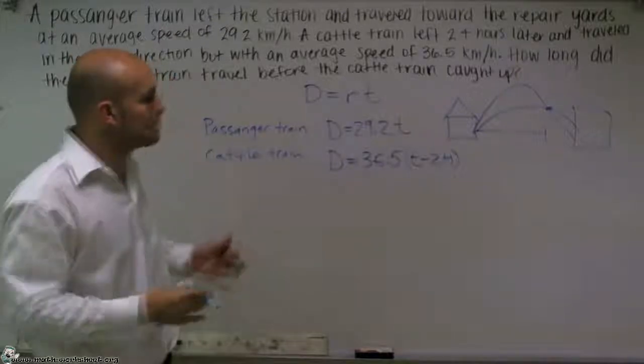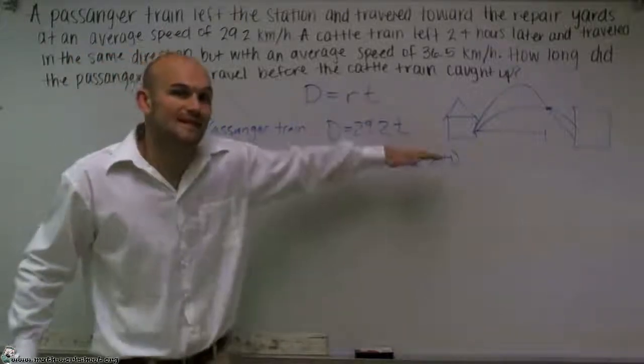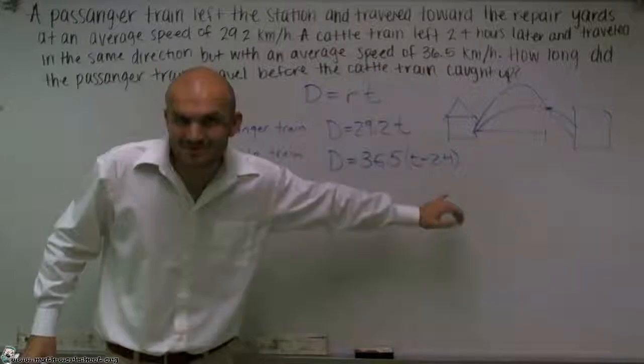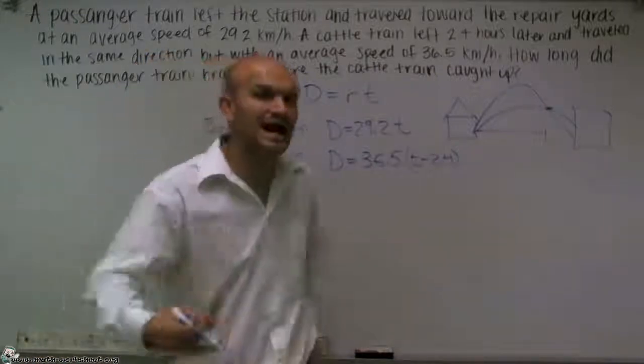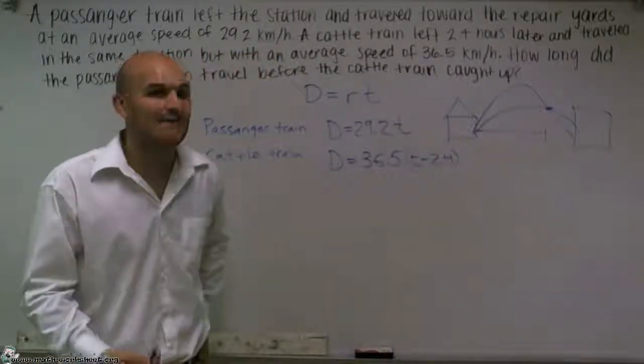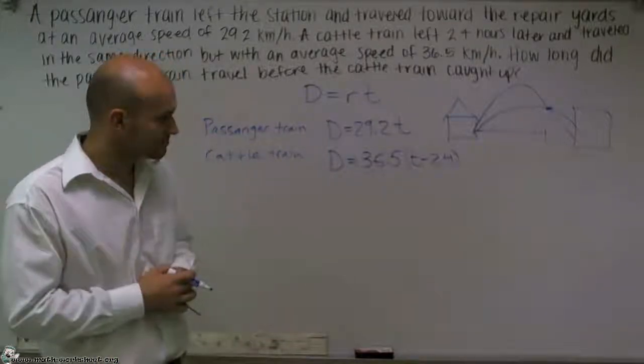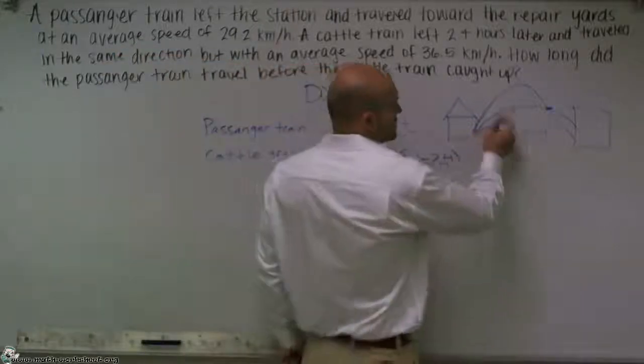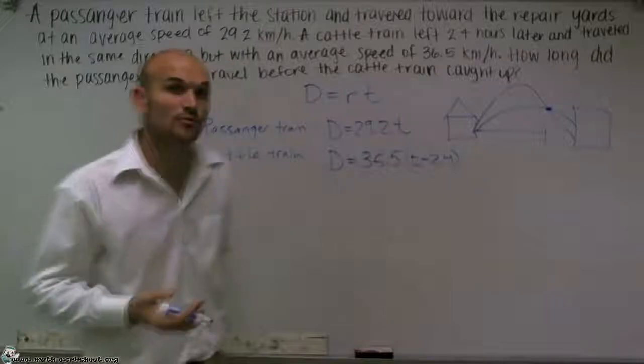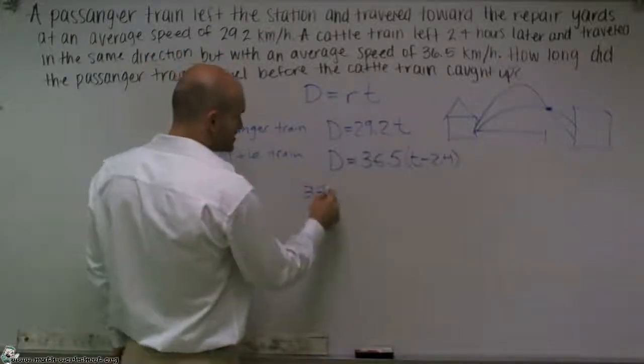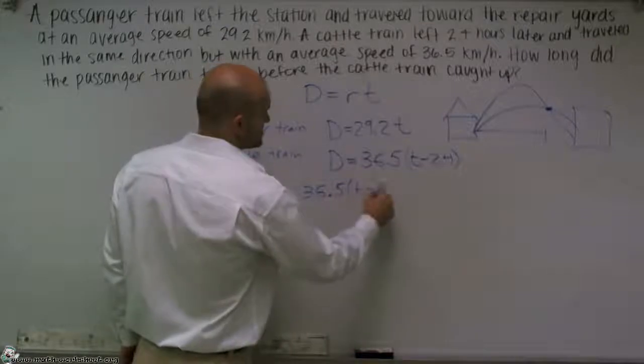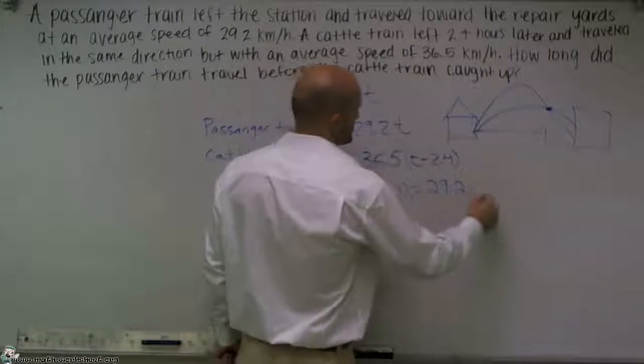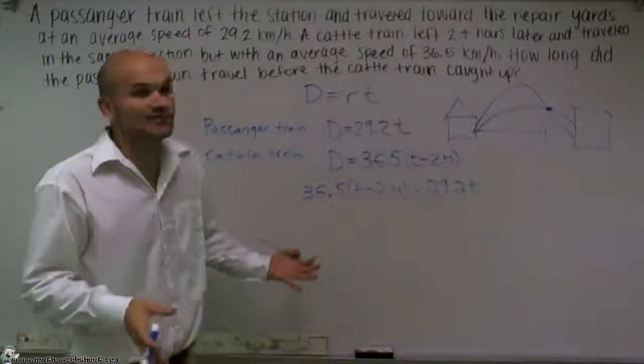So now I have two expressions. I have 29.2 times T and 36.5 times T minus 2.4. And again, we do not know the distance or the time. However, there's one thing that's really important: when you have both these equations solved for D, and we also know that where they cross that distance is going to be equal for both of them. So what I can do is set up my equation to say 36.5 times T minus 2.4 equals 29.2T. We know that distance that they traveled is equal.